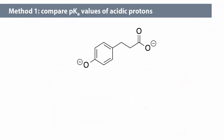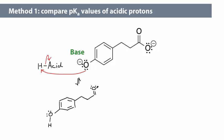We can also use method 1 to determine the most basic atom in a molecule. To do so, we protonate each of the basic atoms in turn, draw each of the conjugate acids, then find the pKa value of each acidic proton. The pKa value of the phenoxide's conjugate acid is 10. What is the pKa value of the carboxylate's conjugate acid?